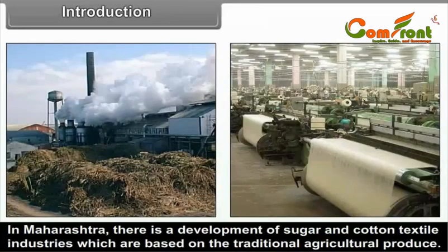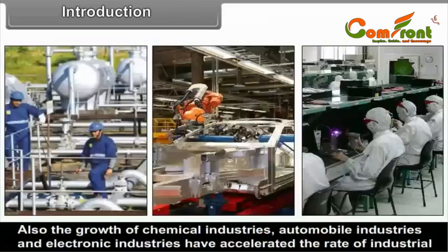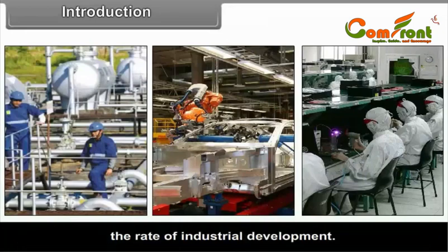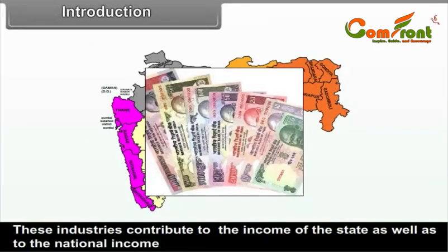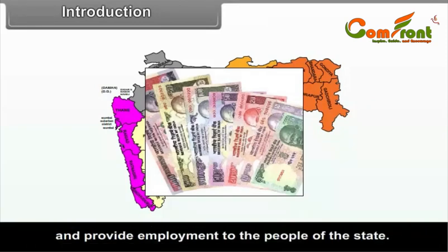In Maharashtra, there is a development of sugar and cotton textile industries which are based on traditional agricultural produce. Also, the growth of chemical industries, automobile industries and electronic industries have accelerated the rate of industrial development. These industries contribute to the income of the state as well as to the national income and provide employment to the people of the state.